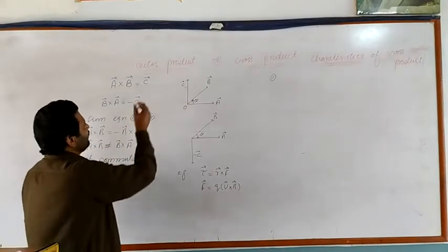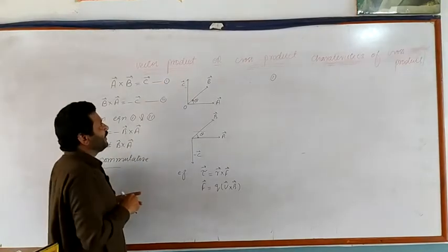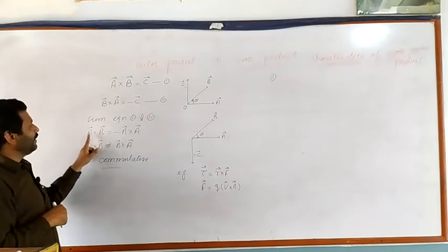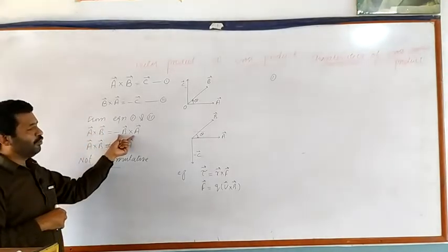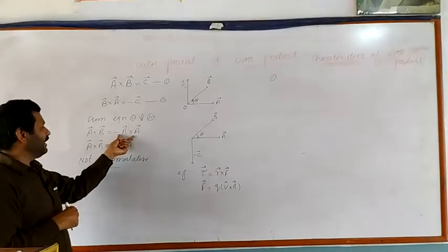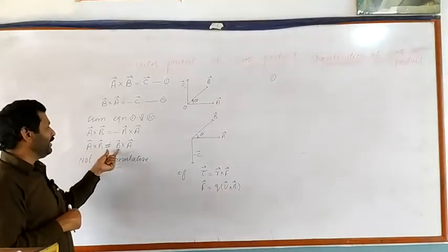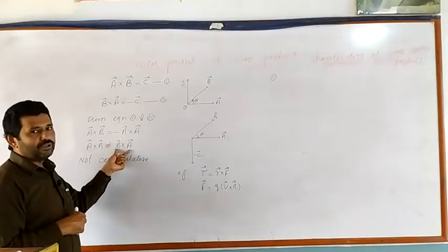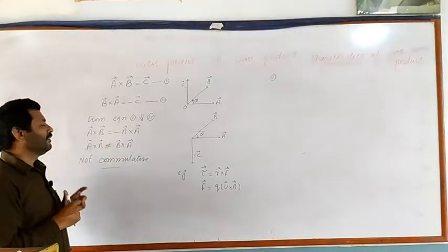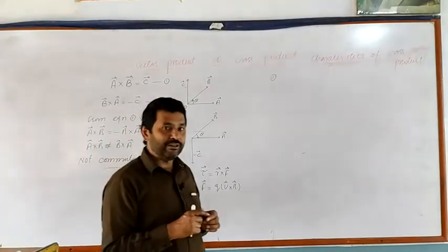Hence we can write: vector B cross vector A is equal to negative C. (Equation 1.) It is clear from equations 1 and 2 that vector A cross vector B is equal to minus vector B cross vector A, meaning vector A cross vector B is not equal to vector B cross vector A. Hence, the cross product of vectors is not commutative.